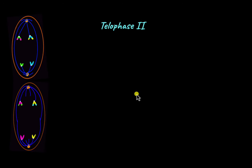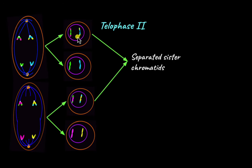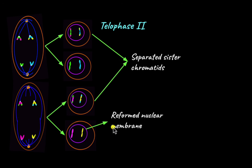Telophase 2 follows anaphase 2, and in telophase 2, you can see the sister chromatids have fully separated and the nuclear membrane has reformed. After telophase 2, cytokinesis follows which results in the formation of four haploid cells.